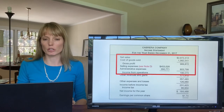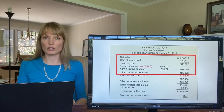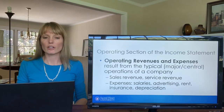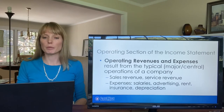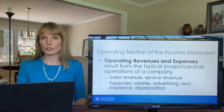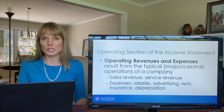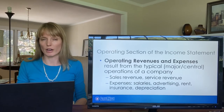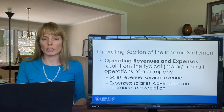Let's take a closer look at the operating section of the income statement. Operating revenues and expenses are the items that result from the company's major, central, or typical operations. For example, if we're talking about Target, we're talking about the sales of products that Target sells, and the expenses the company incurs to run its business and keep its stores open — salaries, advertising, rents, insurance, and depreciation.